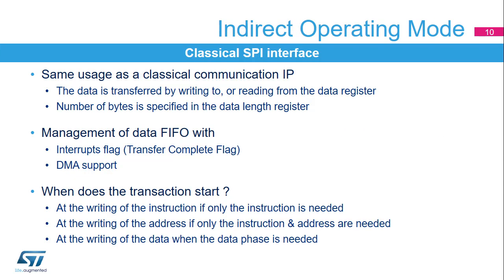In indirect operating mode, the Octo SPI behaves like a classical SPI interface. Transferred data goes through the data register via a FIFO. Data exchange is driven by software or by the DMA using related interrupt flags in the Octo SPI status registers. Each command is launched by the writing of an instruction, address, or data depending on the instruction context.